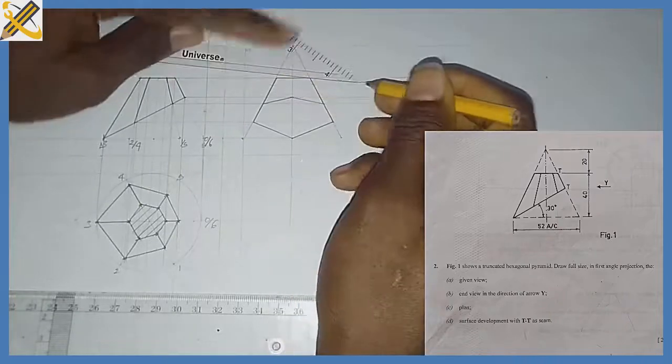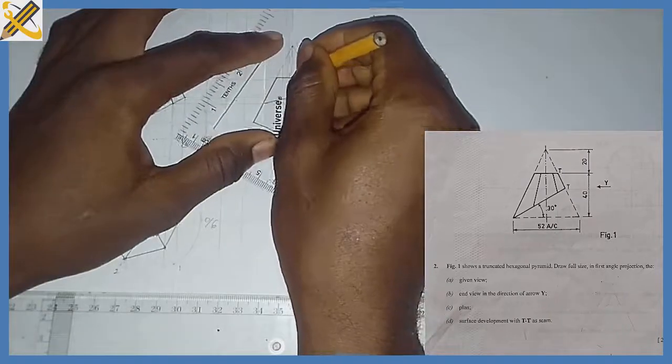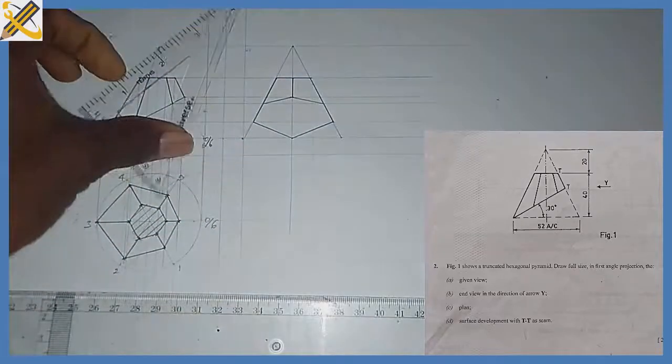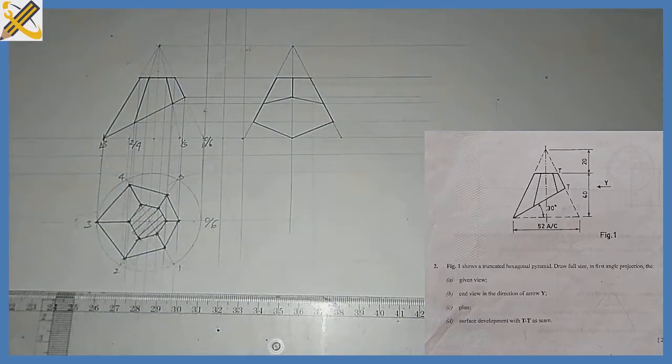So then this comes in this manner, all right. So this is the sectional end view looking in the direction of arrow Y.